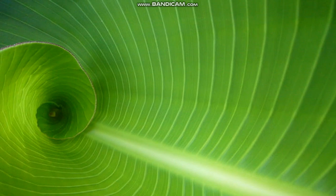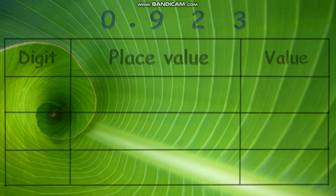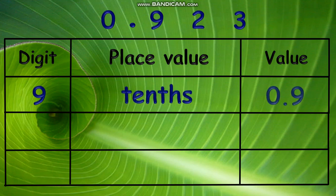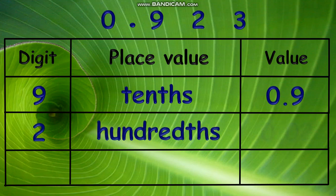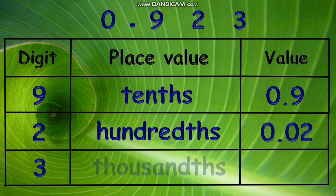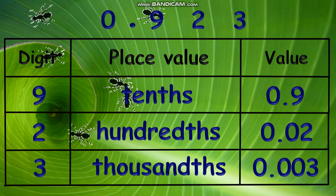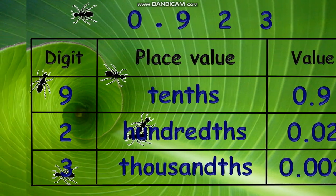Let's have an example for both place value and value with the decimal 0.923. Starting with digit 9, its place value is tenths with a value of nine tenths. The digit 2 is in the hundredths place value, so it has a value of two hundredths. While 3 is in the thousandths place and has a value of three thousandths, or 0.003.